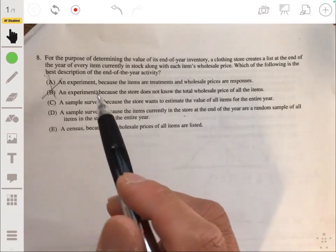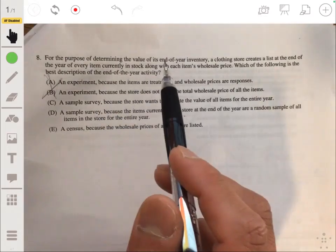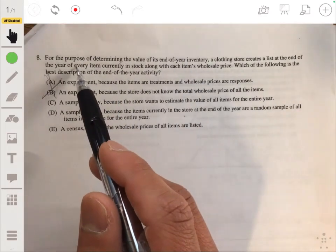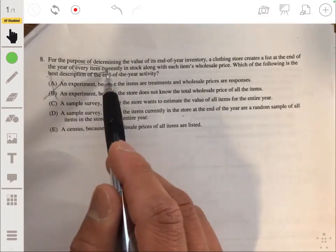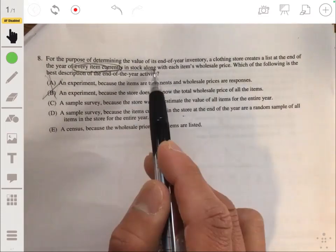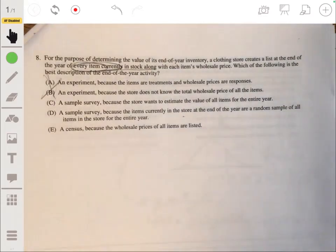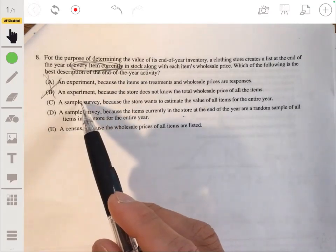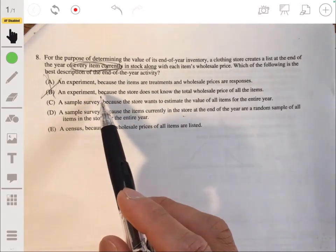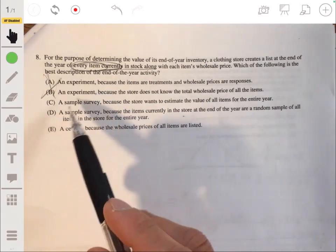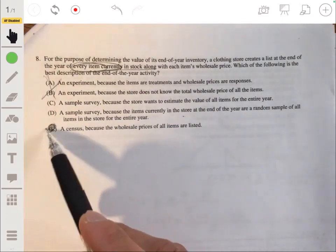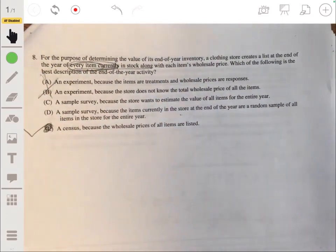So sample survey versus census. The key word here to recognize is that it says they create a list of every item currently in stock. So when you have a census, by definition, a census is basically going to record data on every individual in the population. Whereas a sample only records some, only a portion. So it's going to be E, because it says every item in the stock.